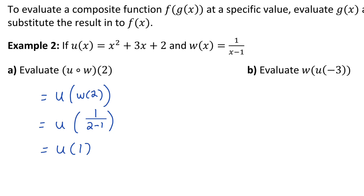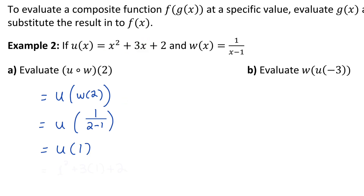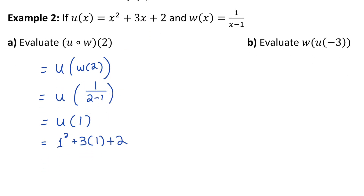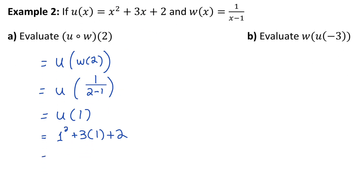To evaluate u at 1, I use 1 as the input for the x's in my u of x function. Replacing those x's with 1: 1 squared plus 3 plus 2 is 1 plus 3 plus 2, which is 6.